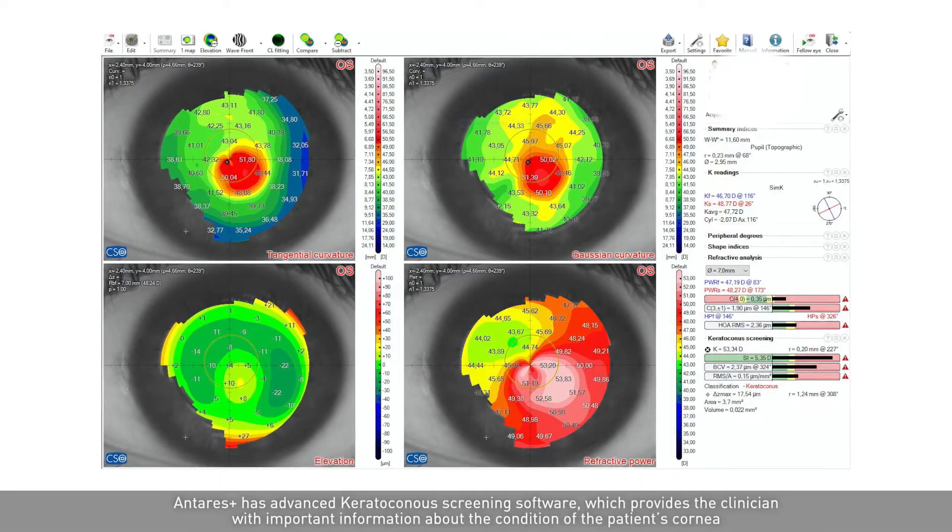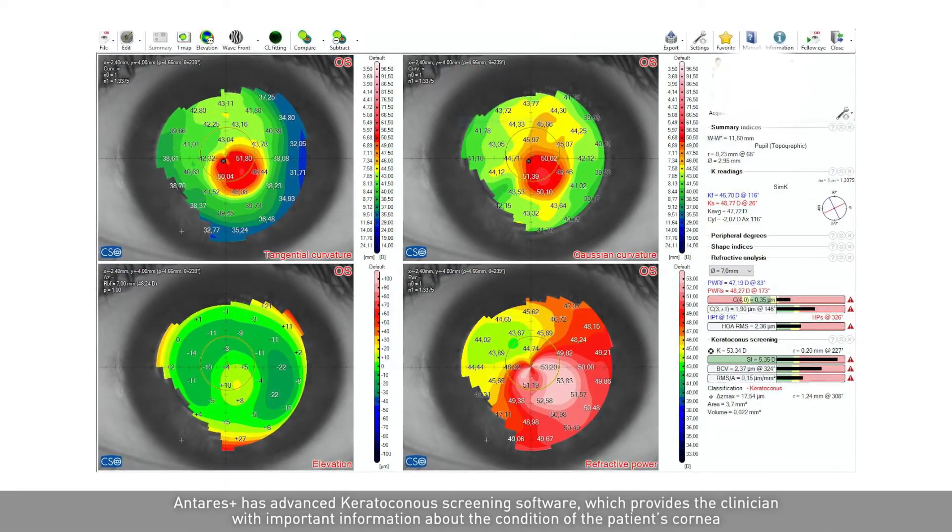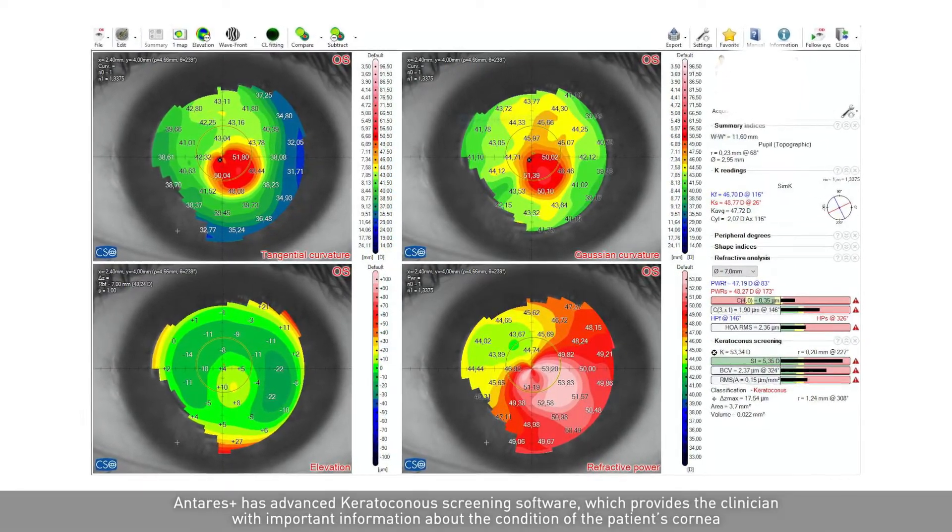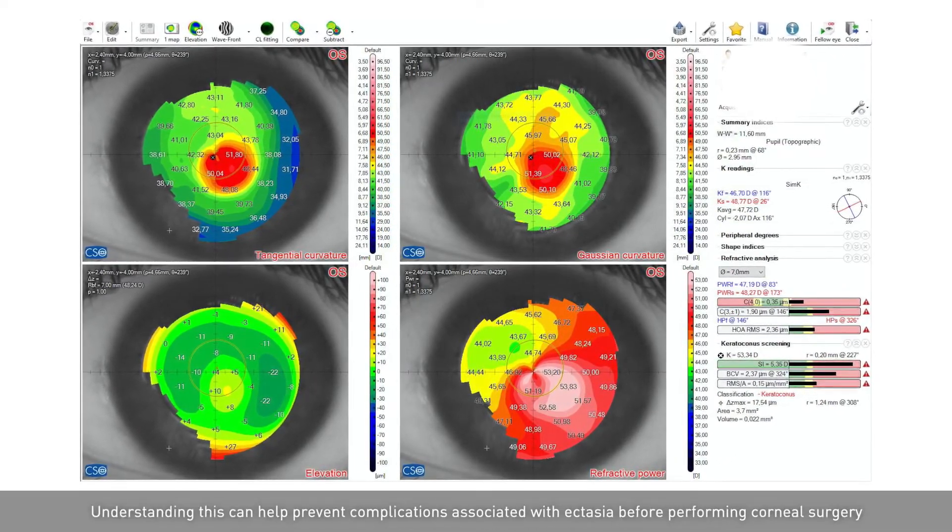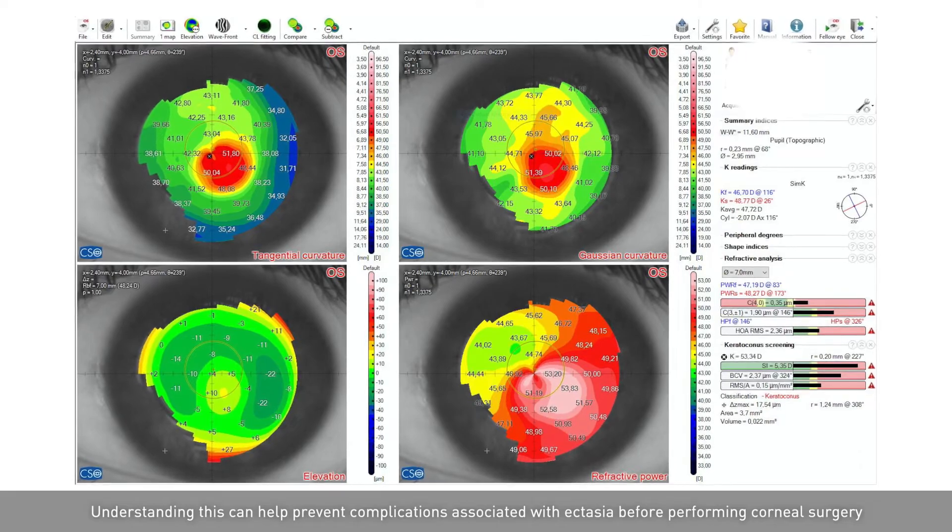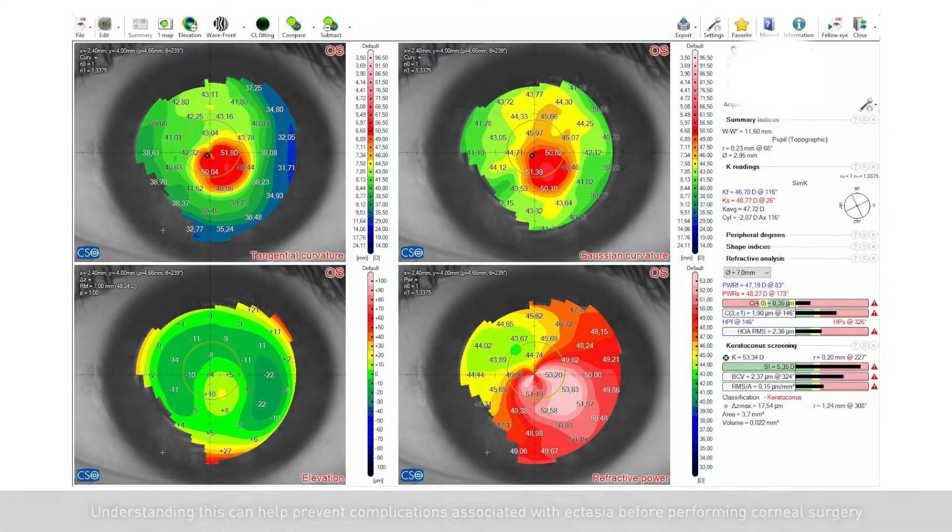Antiris Plus has advanced keratoconus screening software, which provides the clinician with important information about the condition of the patient's cornea. Understanding this can help prevent complications associated with ectasia before performing corneal surgery.